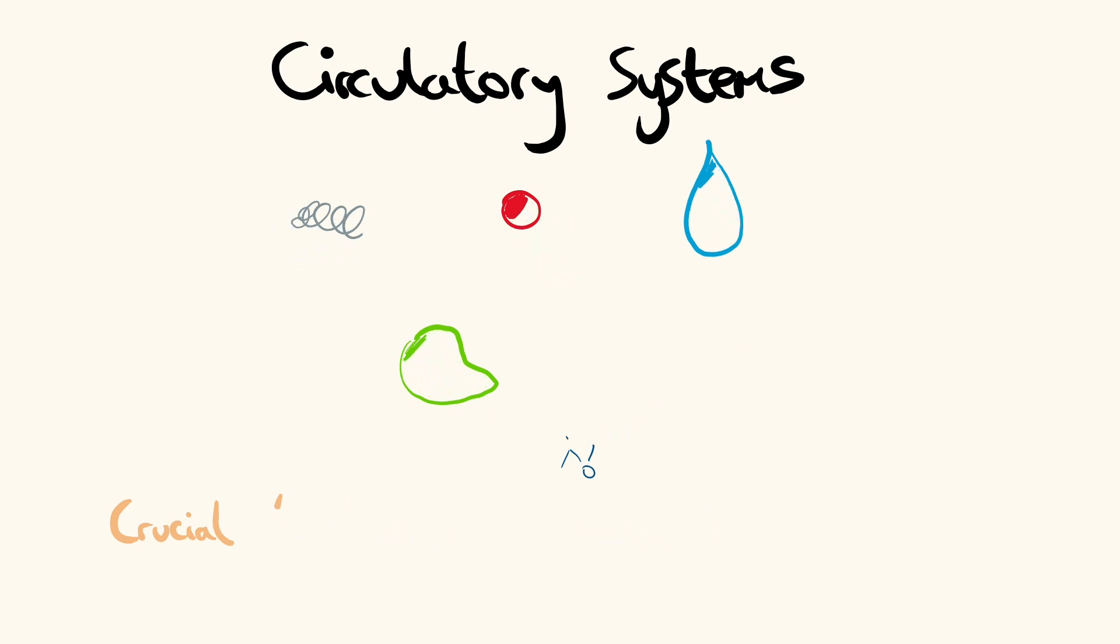To begin understanding the circulatory system, it is important to know what type it is. There are two options as circulatory systems can either be open or closed systems.